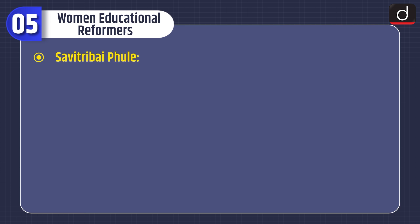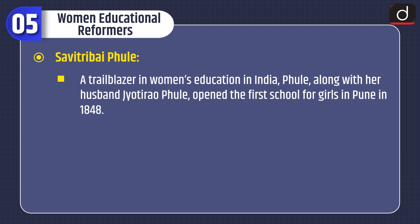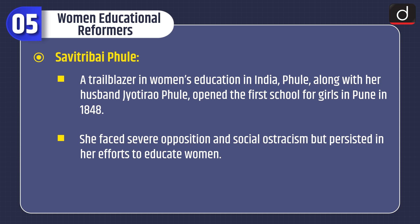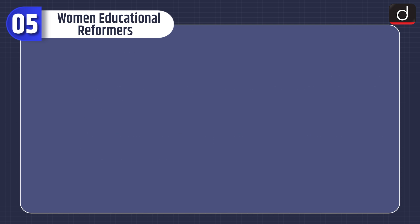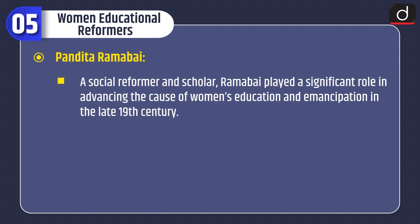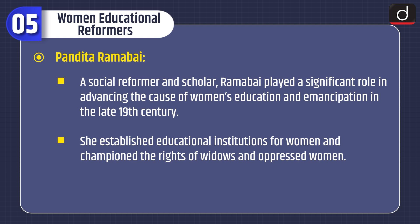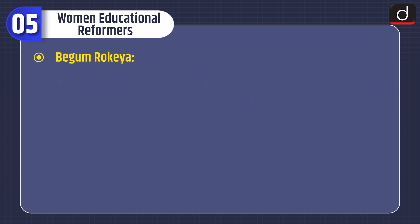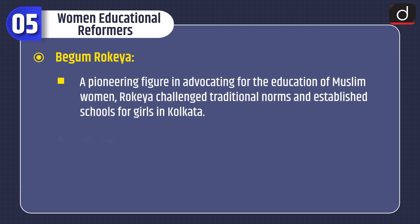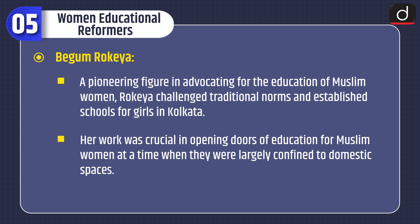Moving on to women educational reformers. Savitribai Phule, a trailblazer in women's education in India, along with her husband Jyothi Rao Phule, opened the first school for girls in Pune in 1848. She faced severe opposition and social ostracism, but persisted in her efforts to educate women. Pandita Ramabai, a social reformer and scholar, played a significant role in advancing the cause of women's education and emancipation in the late 19th century. She established educational institutions for women and championed the rights of widows and oppressed women. Begum Roqueya, a pioneering figure in advocating for the education of Muslim women, challenged traditional norms and established schools for girls in Kolkata. Her work was crucial in opening doors of education for Muslim women at a time when they were largely confined to domestic spaces.